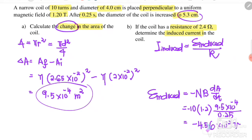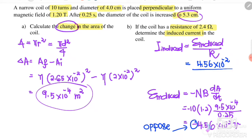We substitute the induced EMF magnitude of 4.56×10⁻² V into I = EMF / R. The negative sign shows direction of opposition, so we don't include it when calculating current magnitude: I induced = 4.56×10⁻² / 2.4 = 1.9×10⁻² A. That is the answer for Example 7B.